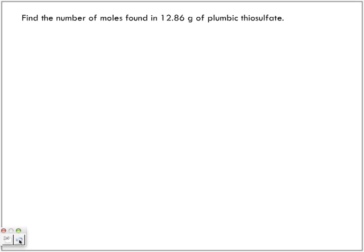Find the number of moles found in 12.86 grams of plumbic thiosulfate. We have the mass of our formula. We are trying to find the number of moles. We're trying to find N. So we need the formula. So the formula is as follows. Plumbic thiosulfate. There is your formula. Pb(S2O3)2. Here's why it's so important. Because if you mess that up, there are all the marks. Bye bye. Just like that.